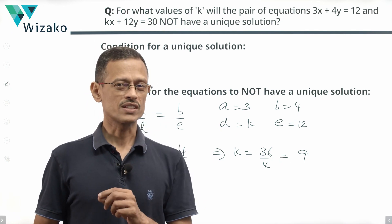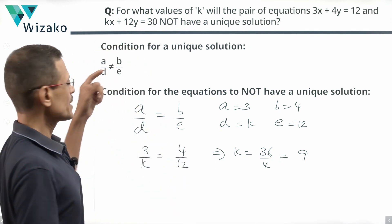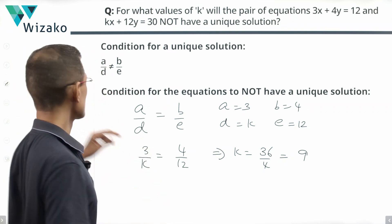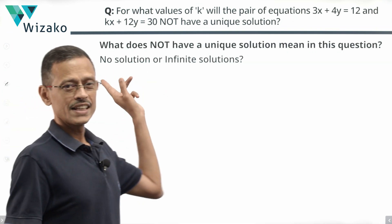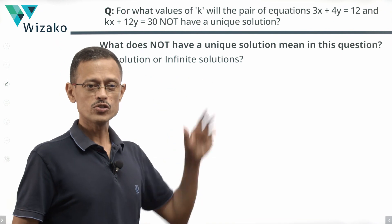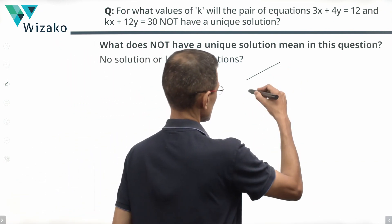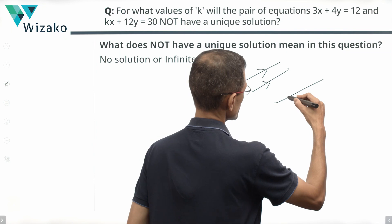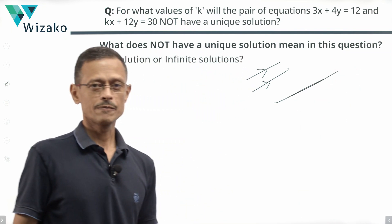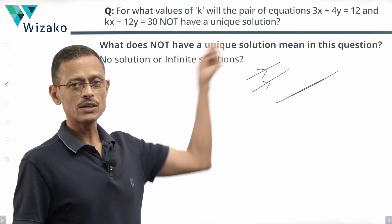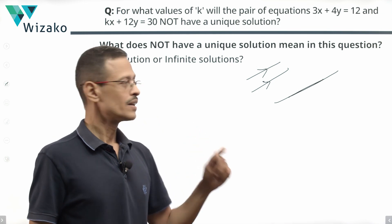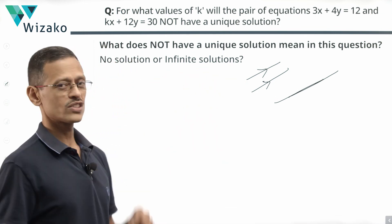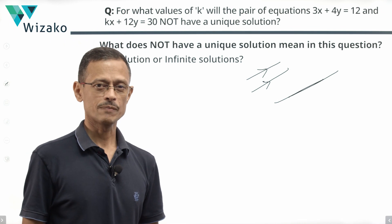Before we wrap up, one last point. Not having a unique solution has two possibilities: it could have no solution (parallel lines) or it could have infinite solutions (coincident lines). When k = 9 in this case, will it be no solution or infinite solutions? How do we determine that?